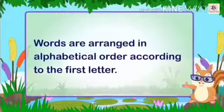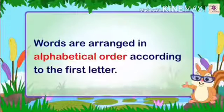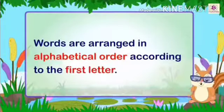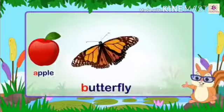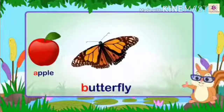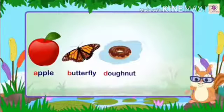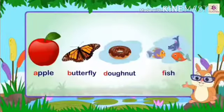Words are arranged in alphabetical order according to the first letter. For example, apple, butterfly, donut, fish.